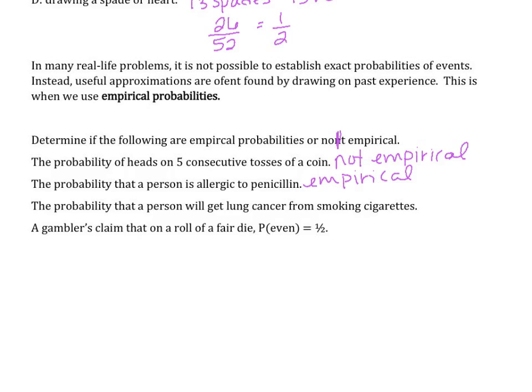The probability that a person will get lung cancer from smoking cigarettes. This is also empirical because you cannot guarantee someone will get lung cancer based on smoking cigarettes. It's completely based on human, our own genetics.